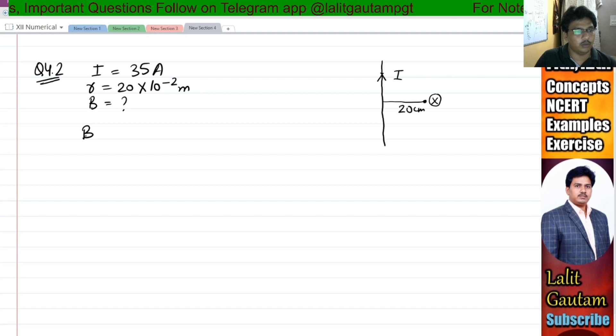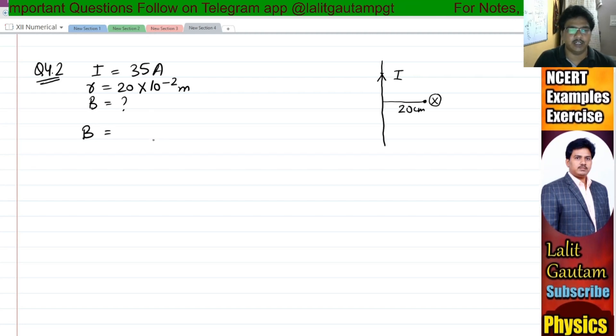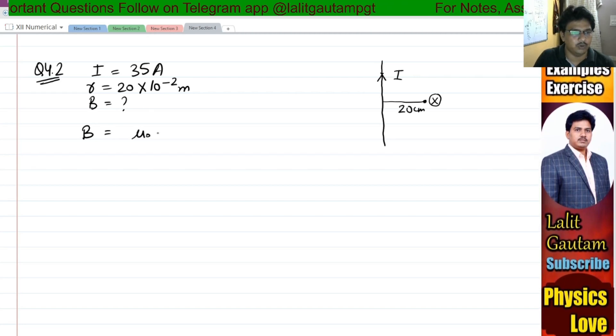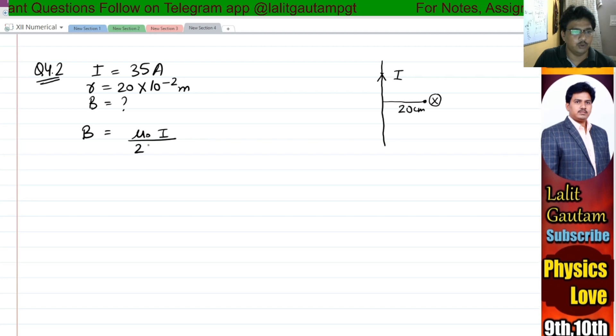The formula for magnetic field of a steady current carrying conductor is B equals mu naught I upon 2 pi r.